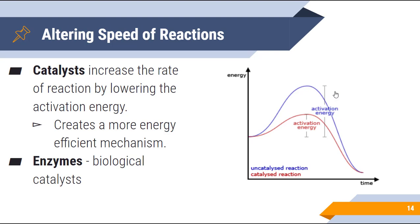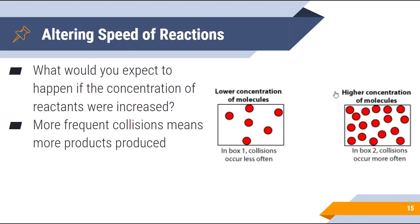Enzymes are a term you're probably very familiar with — this is just the term we use to describe biological catalysts. What would you expect to happen if the concentration of the reactants were increased? If we have more molecules in our reactants, collisions are going to happen more often. More frequent collisions make it more likely that molecules will orient themselves in a way where a chemical reaction can take place. So higher concentrations mean more frequent effective collisions and therefore products produced at a faster rate.